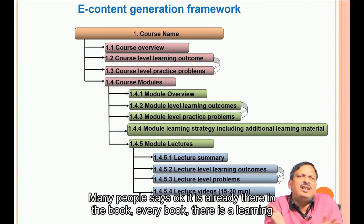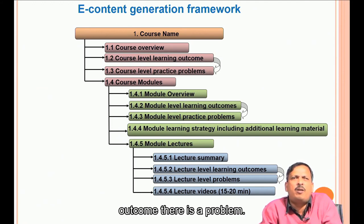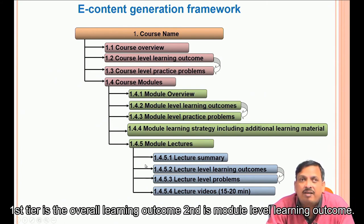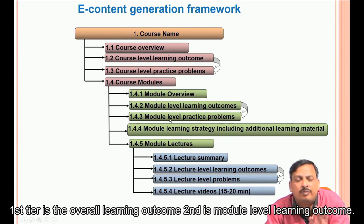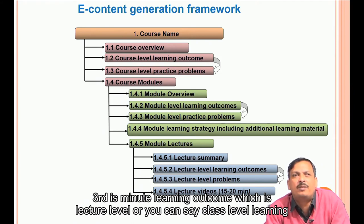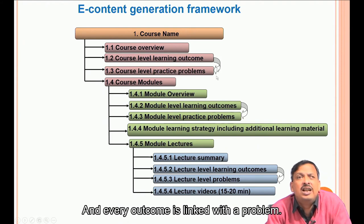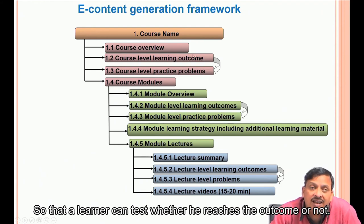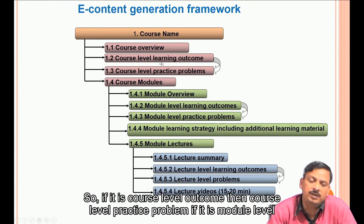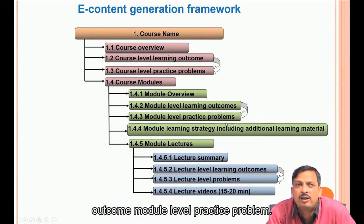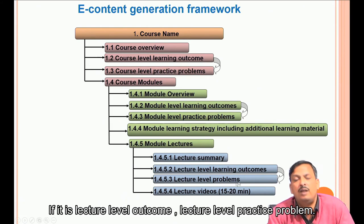Many people say learning outcomes and problems are already in books. The beauty here is that the outcomes are divided into three tiers: the first tier is the overall course-level learning outcome, the second is the sub-module level learning outcome, and the third is the minute or lecture-level learning outcome. Every outcome is linked with a problem so a learner can test whether they have reached it. Course-level outcomes have course-level practice problems, module-level outcomes have module-level practice problems, and lecture-level outcomes have lecture-level practice problems.